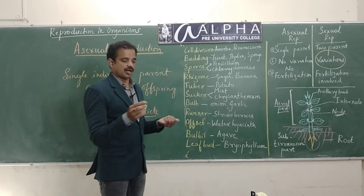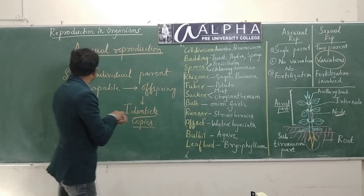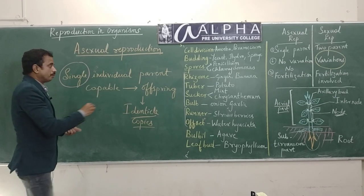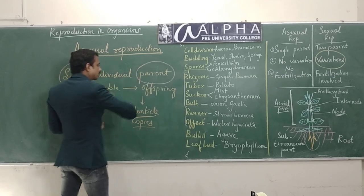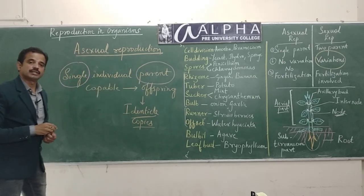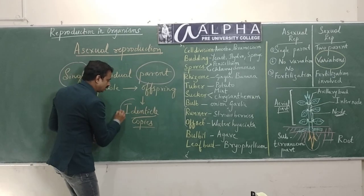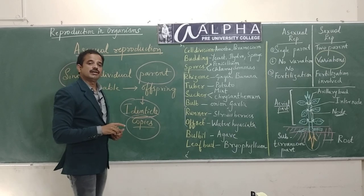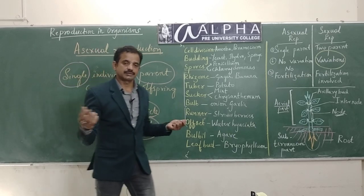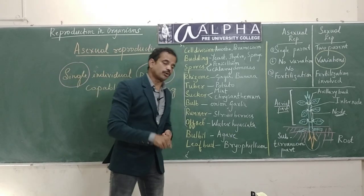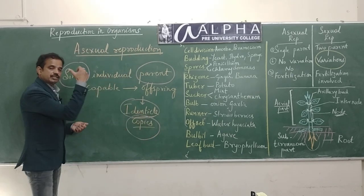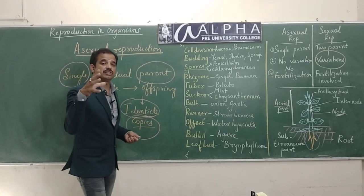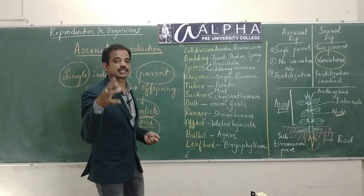We shall understand how this single parent is capable of reproduction, and how the offspring are identical and are copies of their parents. So let us prove this definition by considering the examples which are given in your textbook.